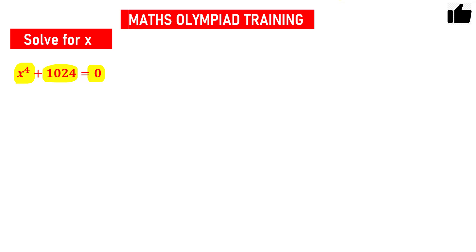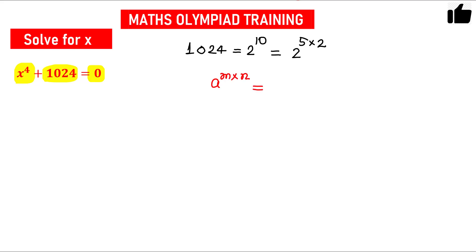You see you have a special number 1024. Can you write this number as a power of some number? If you remember, 1024 can be written as 2 raised to the power 10, or 2 raised to the power 5 times 2. Using the rule of exponents — a raised to the power m×n equals a raised to m, raised to n — we can write this as 2 raised to the power 5, whole squared.